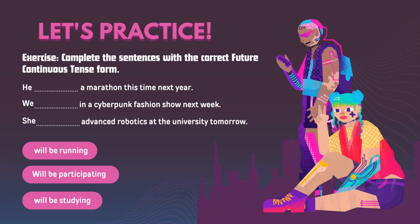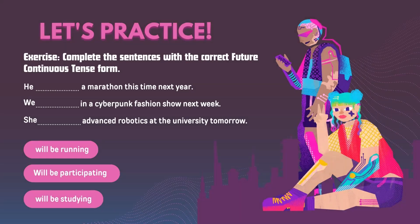Let's practice! Exercise: Complete the sentences with the correct Future Continuous Tense form. He ___ a marathon this time next year. We ___ in a cyberpunk fashion show next week. She ___ advanced robotics at the university tomorrow. Options: 'We'll be running,' 'We'll be participating,' 'We'll be studying.'